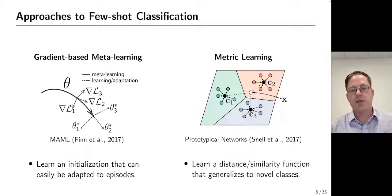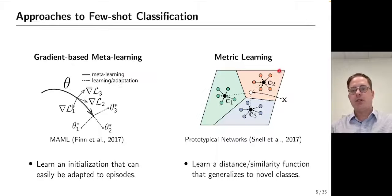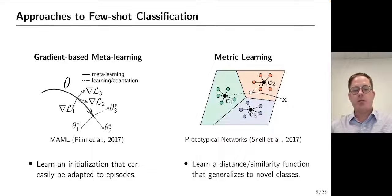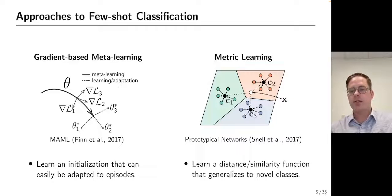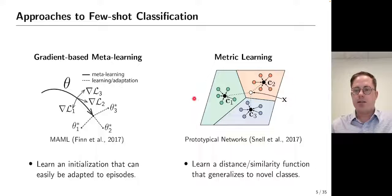Two of the most popular approaches to few-shot classification are gradient-based meta-learning and metric-learning-based approaches. Gradient-based meta-learning approaches such as MAML seek to learn an initialization of a neural network that can easily be adapted to a few-shot episode with just one or a few steps of gradient descent. Metric learning approaches, on the other hand, seek to learn an embedding space where few-shot classification can easily be performed with a simple model like K-nearest neighbors or nearest centroid algorithms. I'll be focusing on metric learning approaches in this talk, as they are more closely related to Gaussian processes.